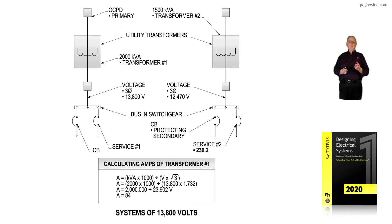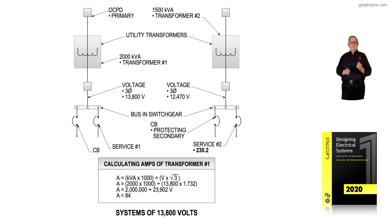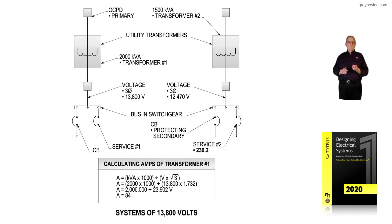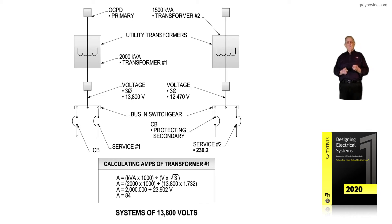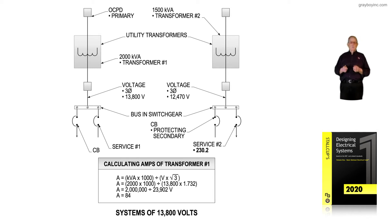If you're running overhead, Article 311 will refer you to 300.37, which is the high voltage over 1,000 volt section in the 300 series. Section 300.37 lists all the wiring methods for above ground. If you're routing those conductors from the transformer to the facility underground, you'd go to 300.50, where wiring methods, burial depths, and all that are listed.